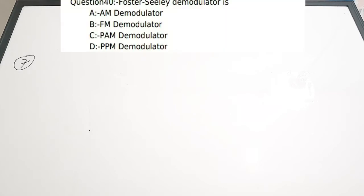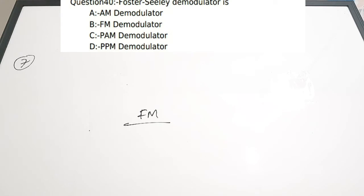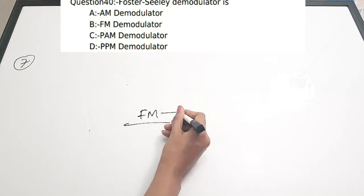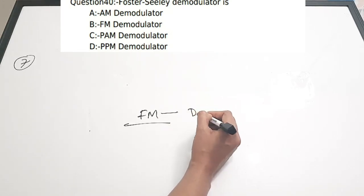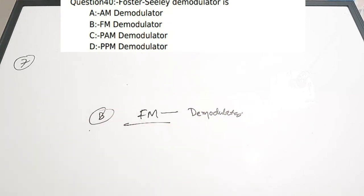Seventh question is a theory question: Foster-Seeley demodulator is — A) AM demodulator, B) FM demodulator, C) PAM demodulator, D) PPM demodulator. Foster-Seeley is always associated with frequency modulation and is used for demodulating FM waves. Correct answer is option B, FM demodulator.